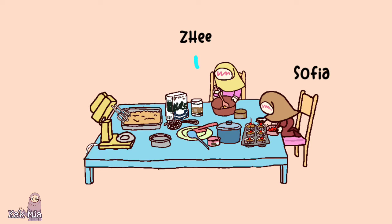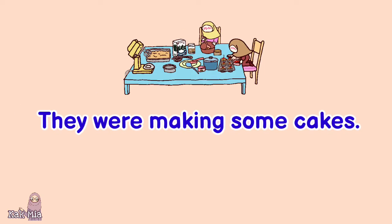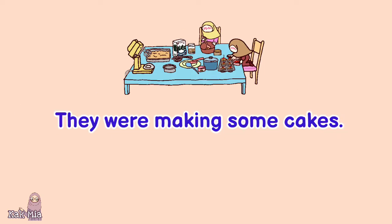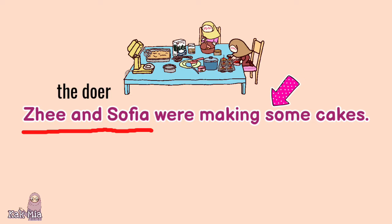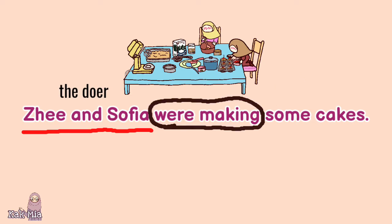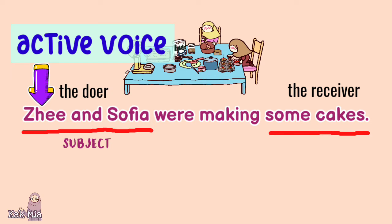In this picture, we have Zee and Sophia. What were they doing in the picture? Yeah, you're right. They were making some cakes. Zee and Sophia were making some cakes. From this sentence, we understand that Zee and Sophia are the doers of the action, while some cakes are the receiver of the action. When the doer of the action takes the position as the subject of the sentence, then we can say that this sentence is an active voice.